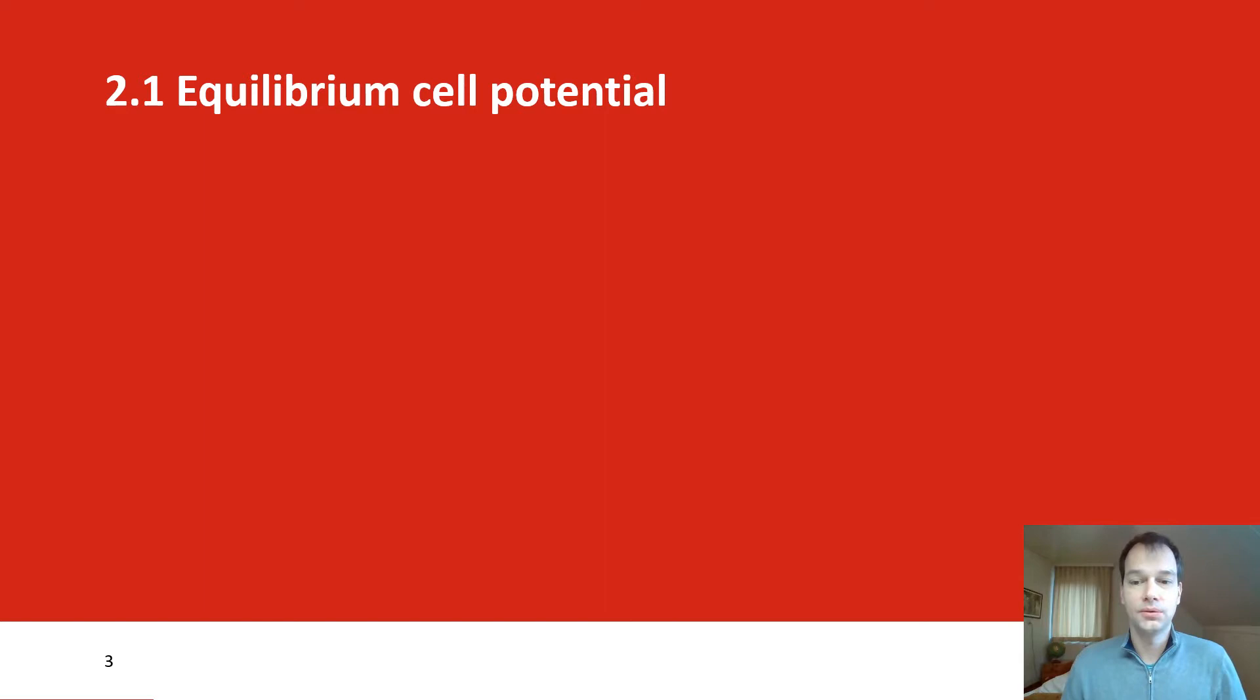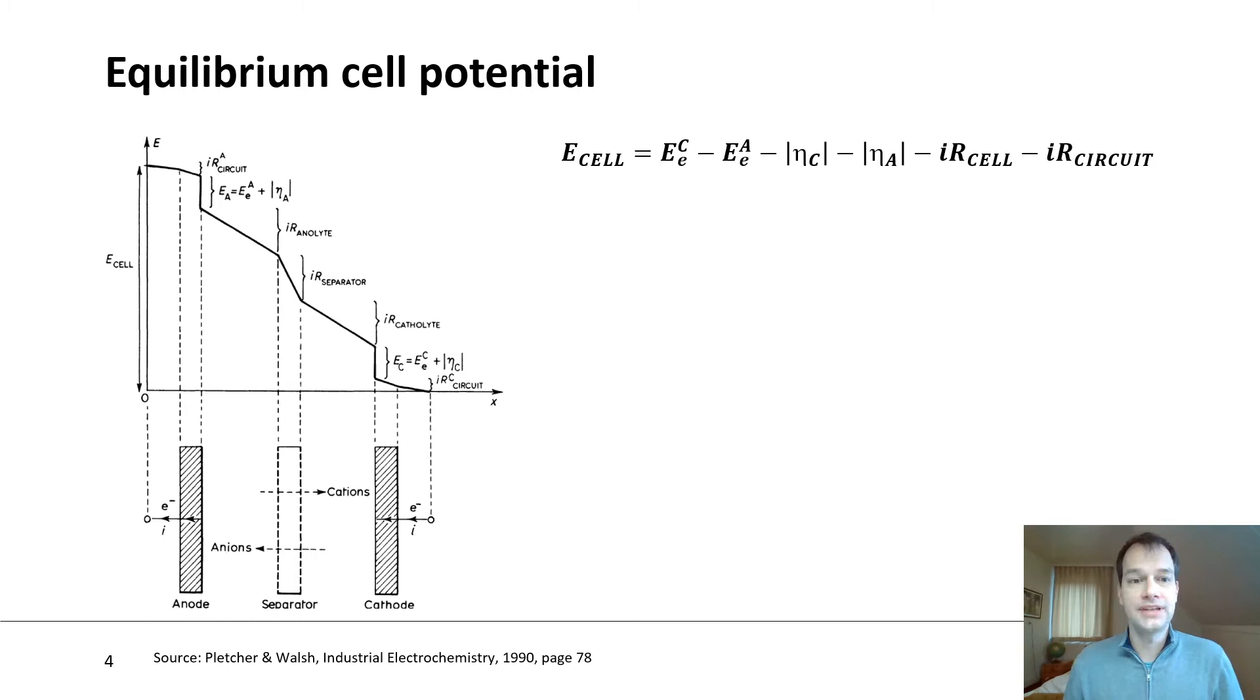Now let's start with the first part, which is on the equilibrium cell potential. Here's the first slide on the equilibrium cell potential. The first thing I want you to know is that the equilibrium cell potential is a component of the total cell potential. The figure on the left I will show quite often and also during other modules, because it shows what the total cell potential consists of.